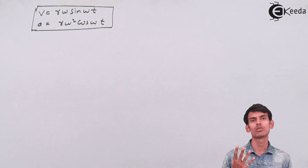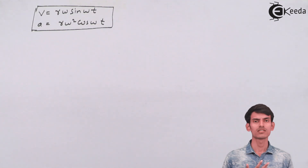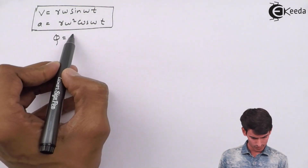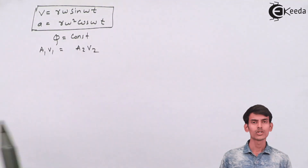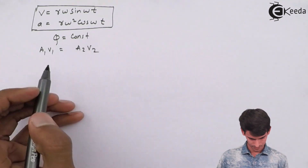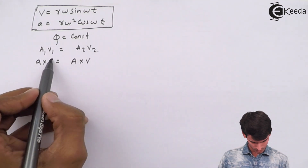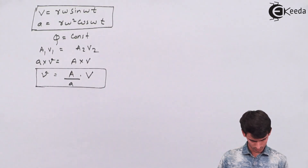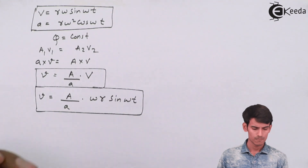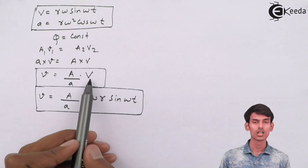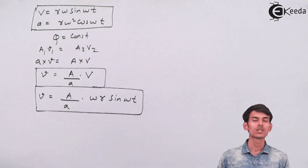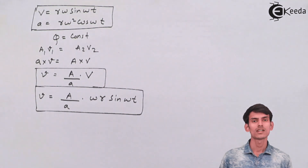We'll use the continuity equation — the discharge remains the same in the cylinder as well as in the pipe, so we equate discharge at both ends. Here a₁v₁ = a₂v₂, where a₁ and v₁ are area and velocity in the pipe, and a₂ and v₂ are area and velocity in the cylinder. The velocity of water in the pipe is then capital A divided by small a, times ω·r·sin(ωt). Now to get the acceleration inside the pipe, we differentiate this velocity equation.